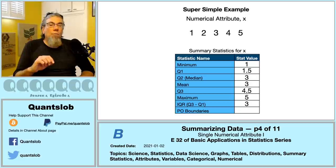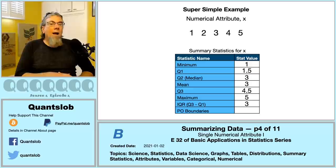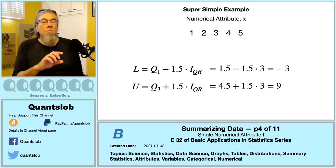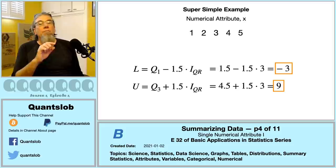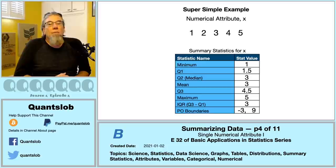Now for the potential outlier boundaries — a pair of values. If any observation falls outside this interval, we can regard it as a potential outlier. I stress the adjective 'potential' — it's a very bad idea to use the unqualified word 'outlier.' One person's outlier might be another person's jackpot. The lower boundary is Q1 minus 1.5 times IQR; the upper boundary is Q3 plus 1.5 times IQR. In our example: 1.5 × IQR = 4.5, so lower = 1.5 − 4.5 = −3, and upper = 4.5 + 4.5 = 9. None of our values fall outside this interval.